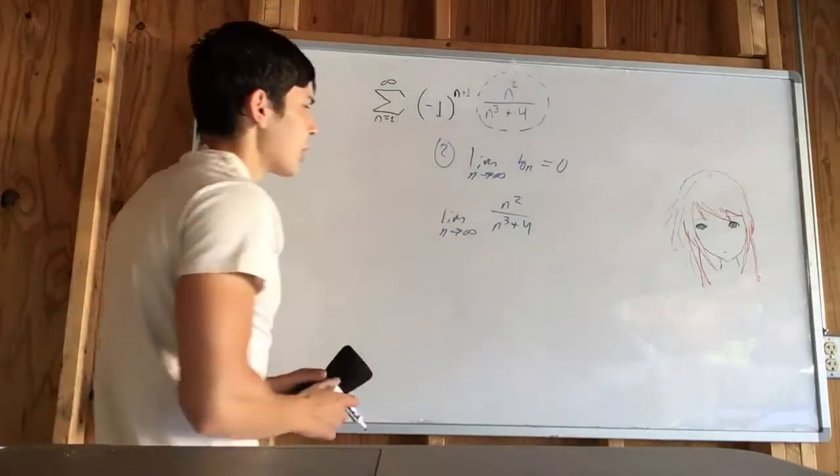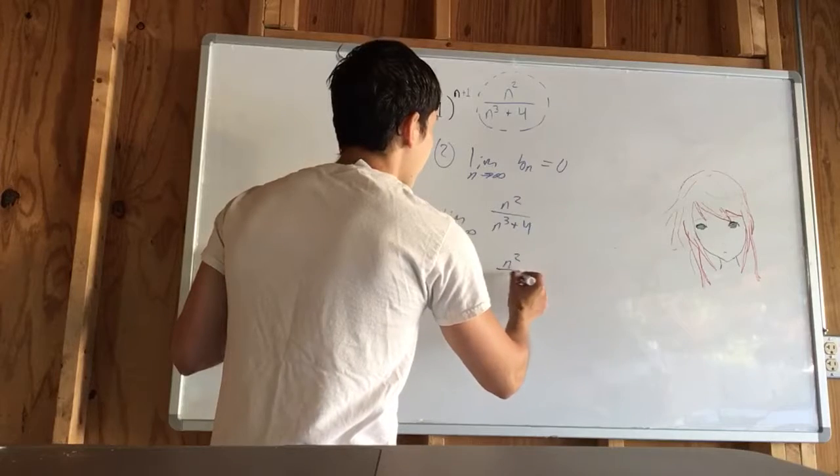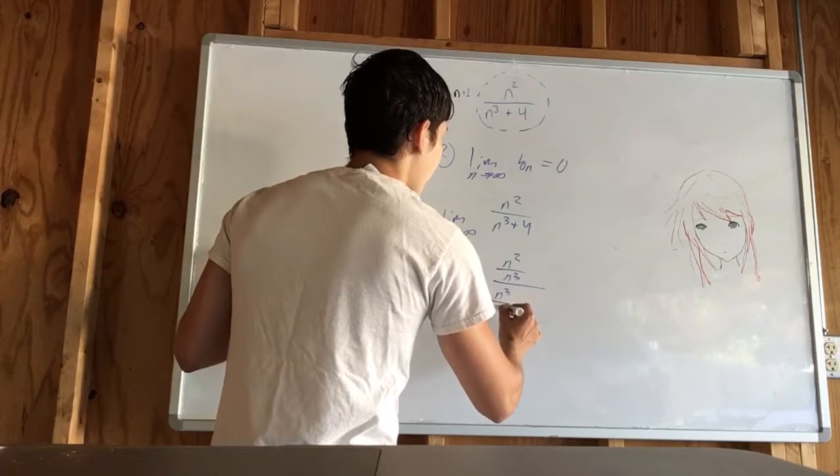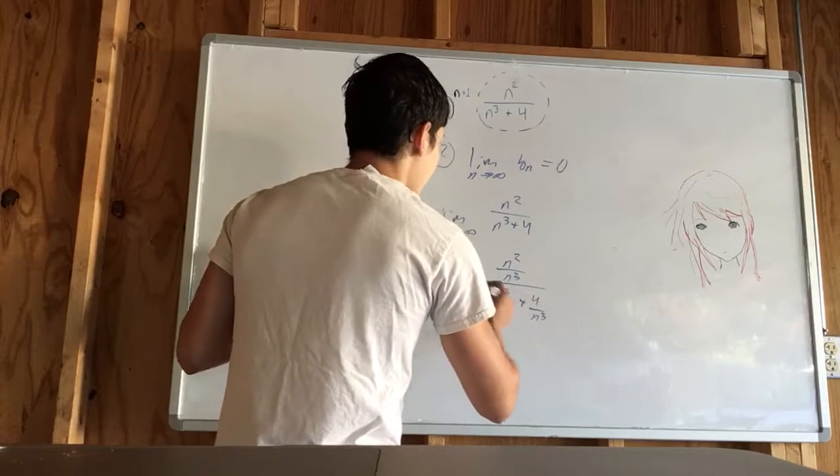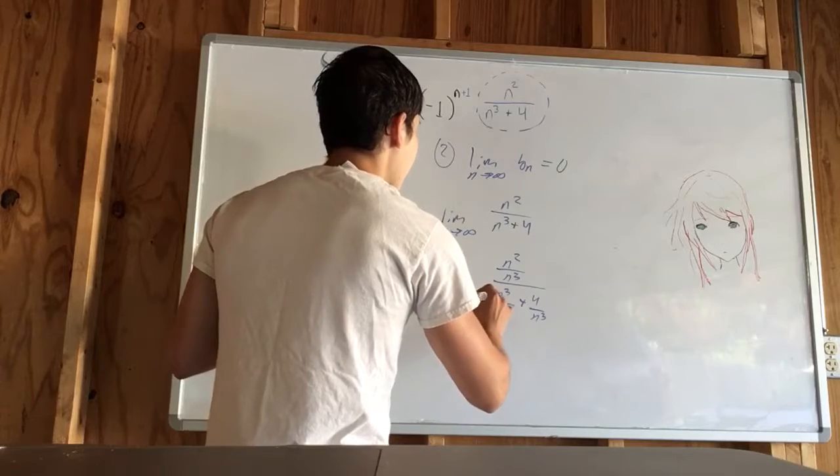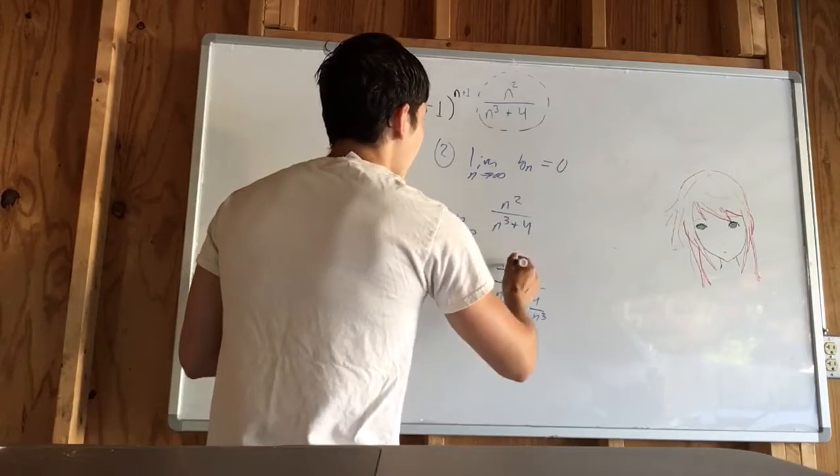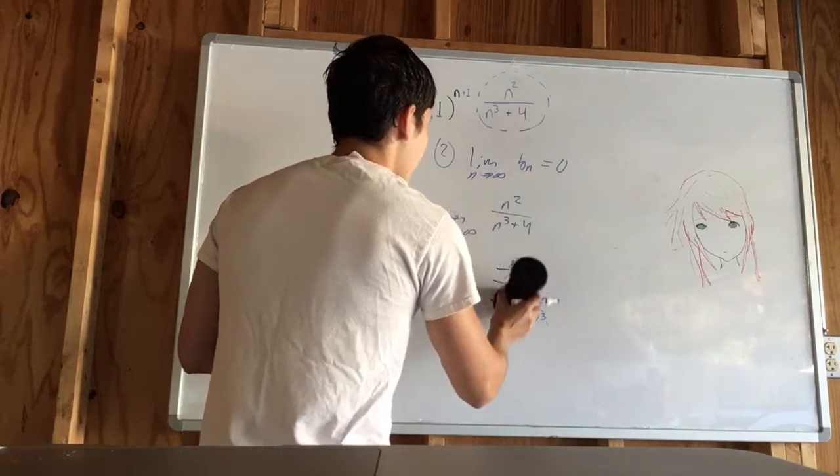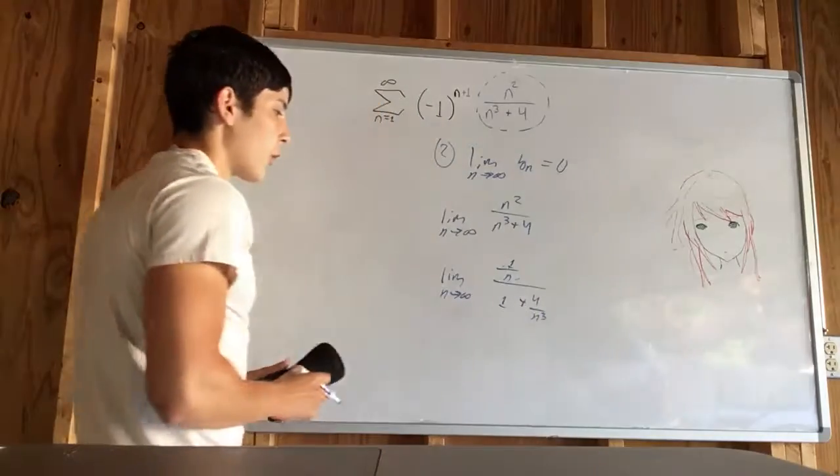We can divide by the term with the greatest power. So, this would be n squared over n cubed, and we would have n cubed over n cubed plus 4 over n cubed. We're taking the limit as n approaches infinity. So, this would have 1 over n. This would just be 1. And that would be 4 over n cubed.